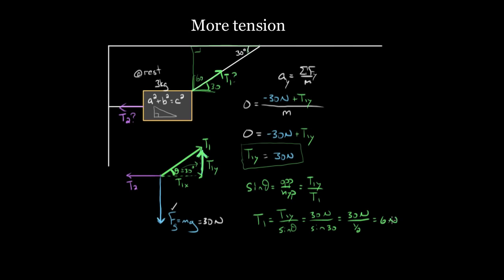That might seem crazy — T1 is 60 Newtons when the chalkboard only weighs 30 Newtons? If you hung it by a single vertical string, tension would be just 30 Newtons. But because the rope is at an angle, its vertical component must equal 30 Newtons. Since that's only part of the total tension, the total has to be more — in this case, 60 Newtons. The component has to equal gravity, so the total magnitude must be larger.